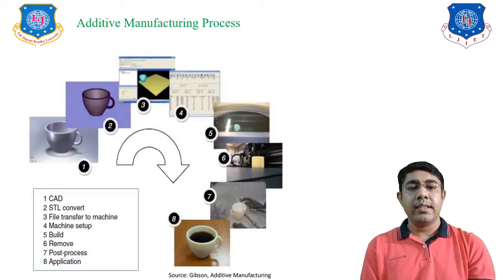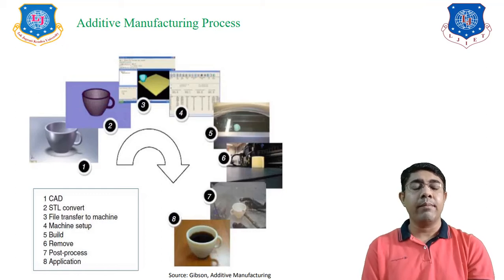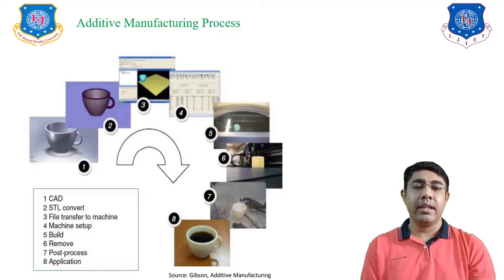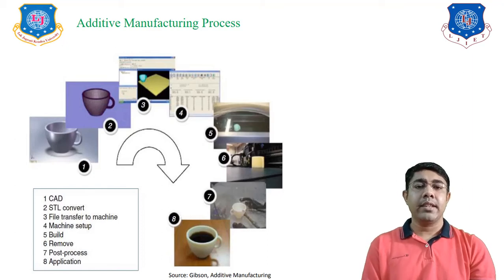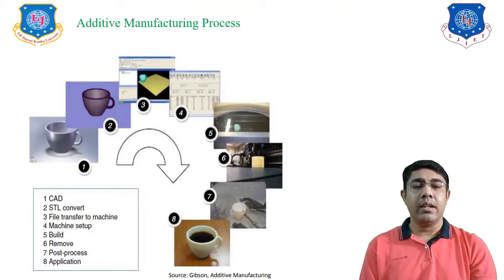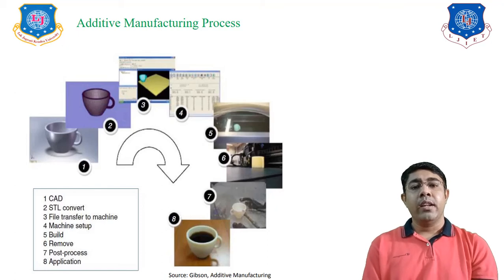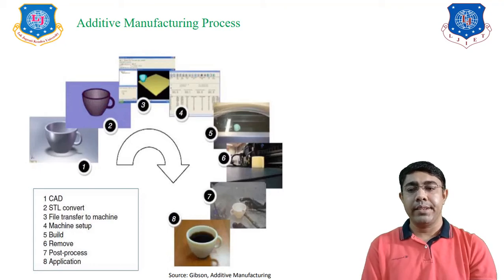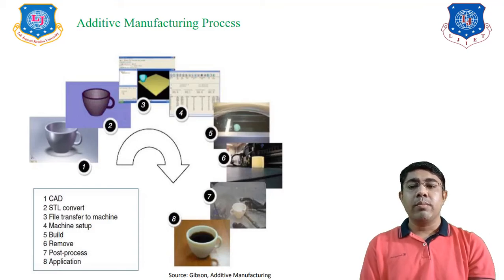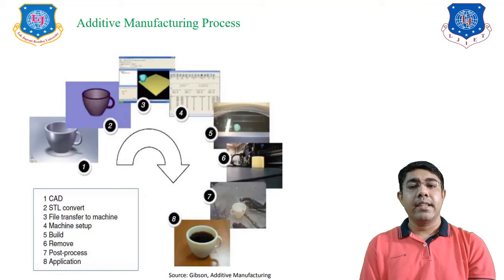Step four: prepare the machine setup. Step five: build the component layer by layer. Step six: remove the component from the machine, and also remove any supporting materials. Sometimes, for critical cross-sectional geometries, supporting materials are required, and these must be removed after the component is completed. Step seven is post-processing — removing excess material and finishing the surface of the component.